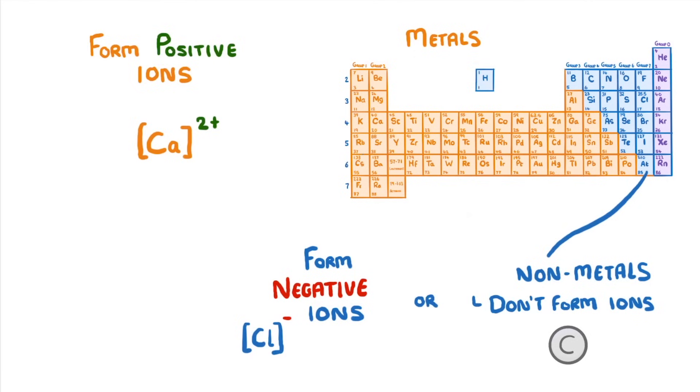To understand why this is, we need to consider the electron arrangements of the atoms. And remember from previous videos that all atoms will want to have a full outer shell of electrons in order to be stable.